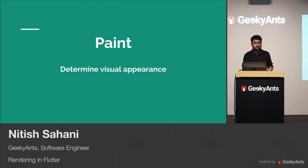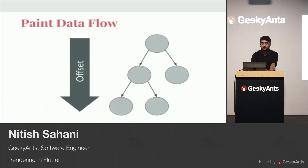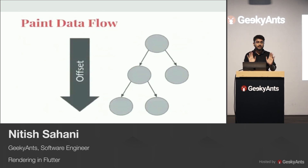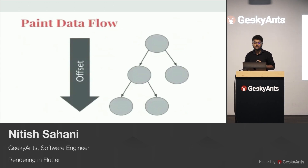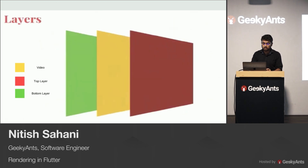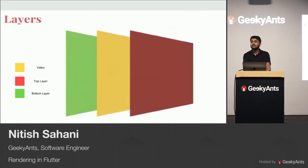After layout, we paint. Painting is about determining visual appearance. The simple process would be to go down the tree and paint as the positions or offsets are provided. But that's not the complete truth — that's not quite how things work in Flutter. The complication with painting is that you have to deal with layers.